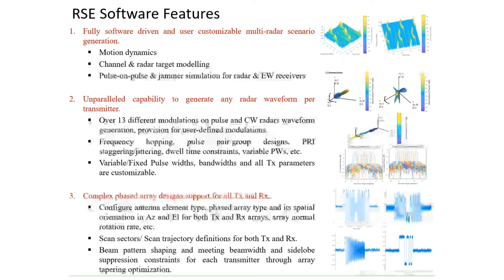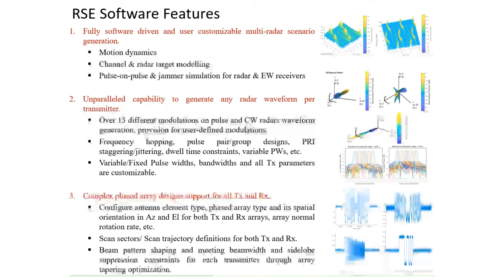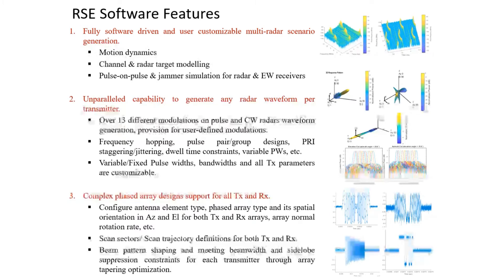The RSE software can also be configured to define volumetric scans for both transmitters and receivers in azimuth and elevation. Scan sectors with any arbitrary scan bin resolutions can be defined, and scan trajectories — including conventional raster, helical, conical scans, or any user-defined scan — can be specified within the scan sector. The software performs coherent integration over scan bins to simulate aggregate IQ data and induce scanning effects, and can also exercise beam width and side lobe constraints via an optimization algorithm.